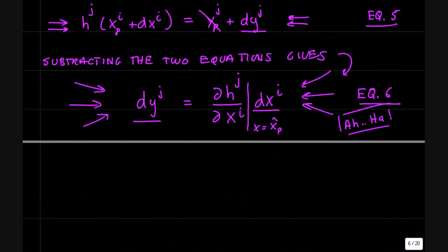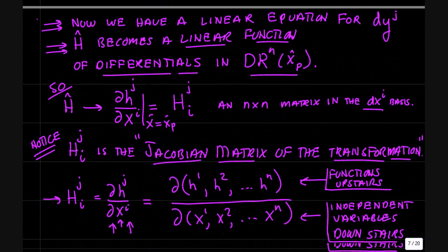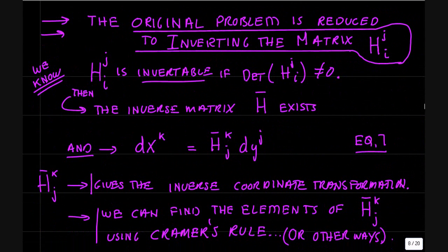Okay, a little bit on Jacobians. Now, we have this equation right here. So to solve this equation, we just need to invert this matrix dh_j by dx^i.